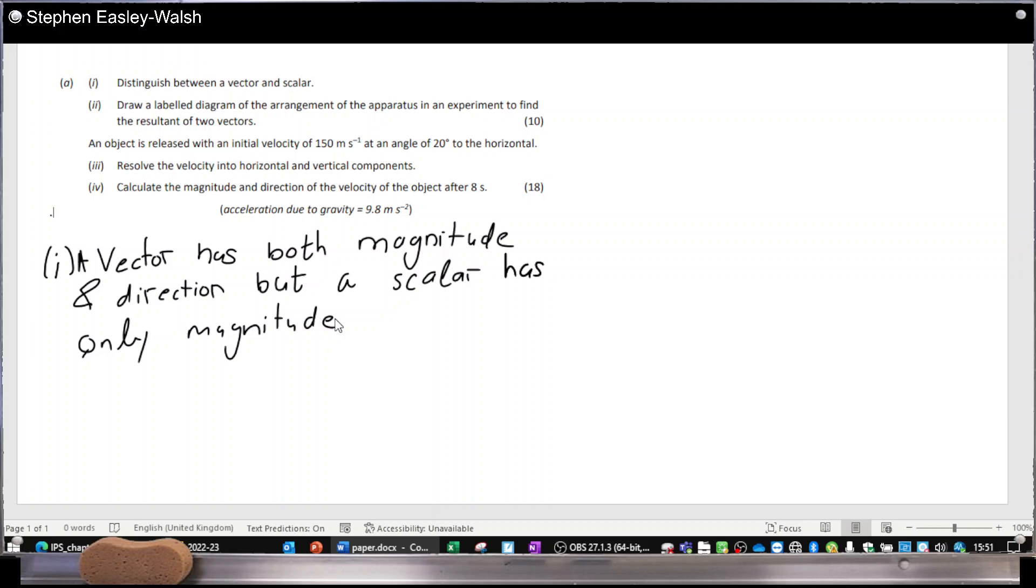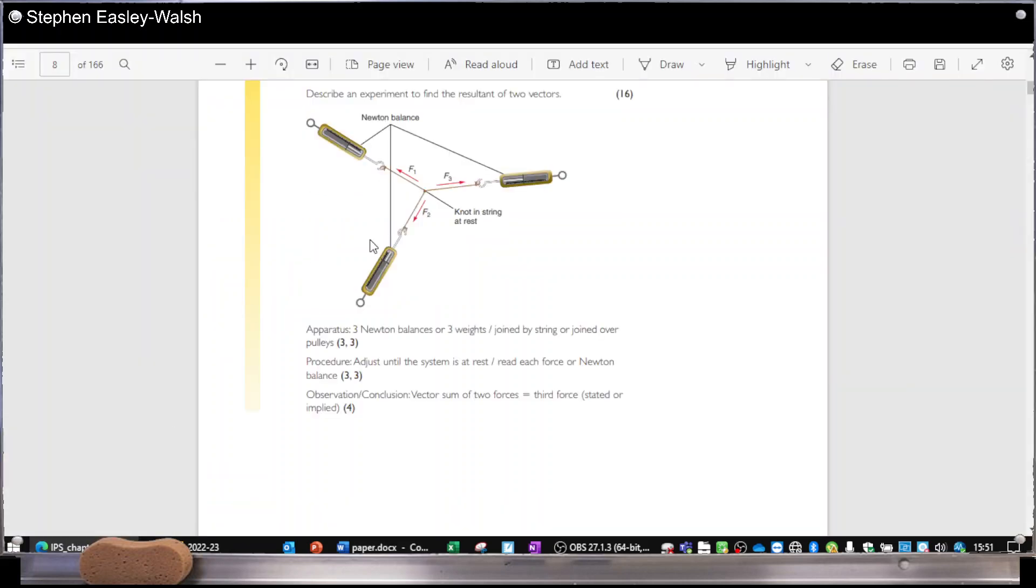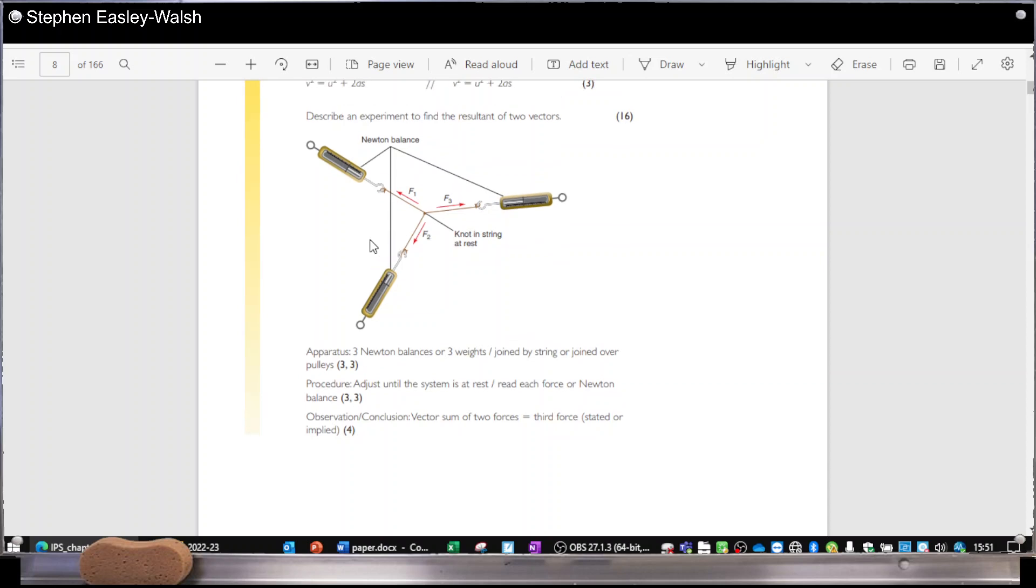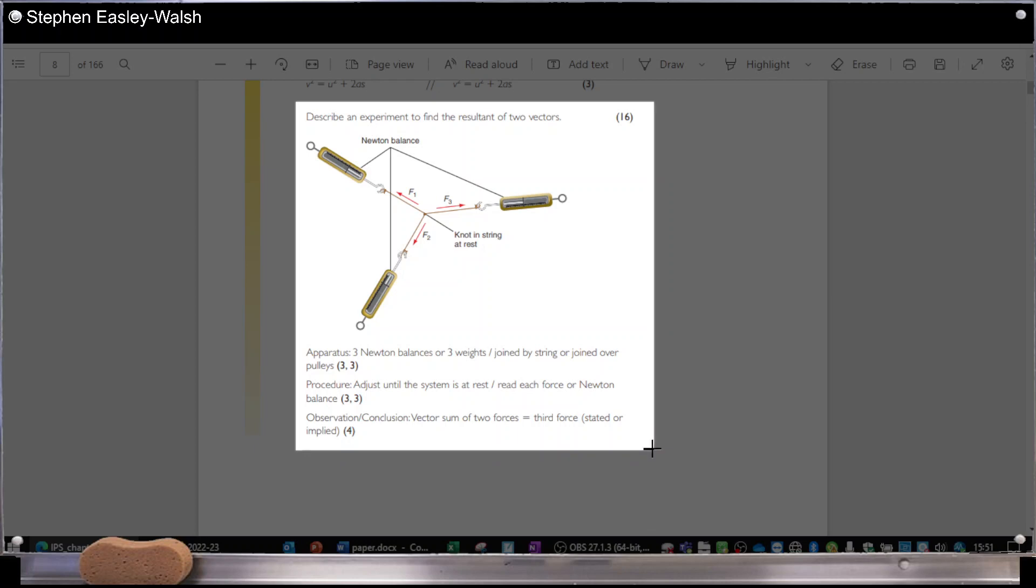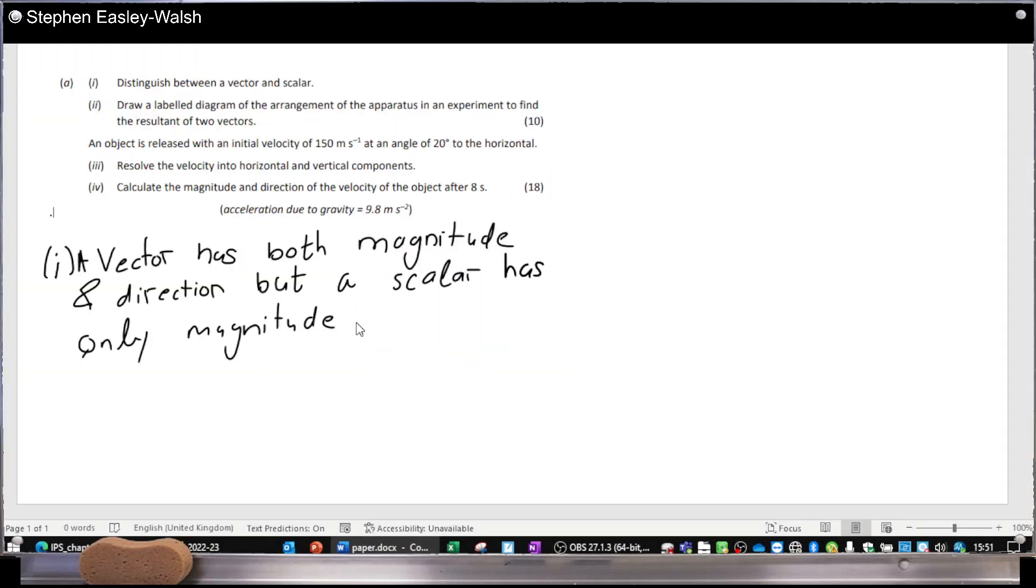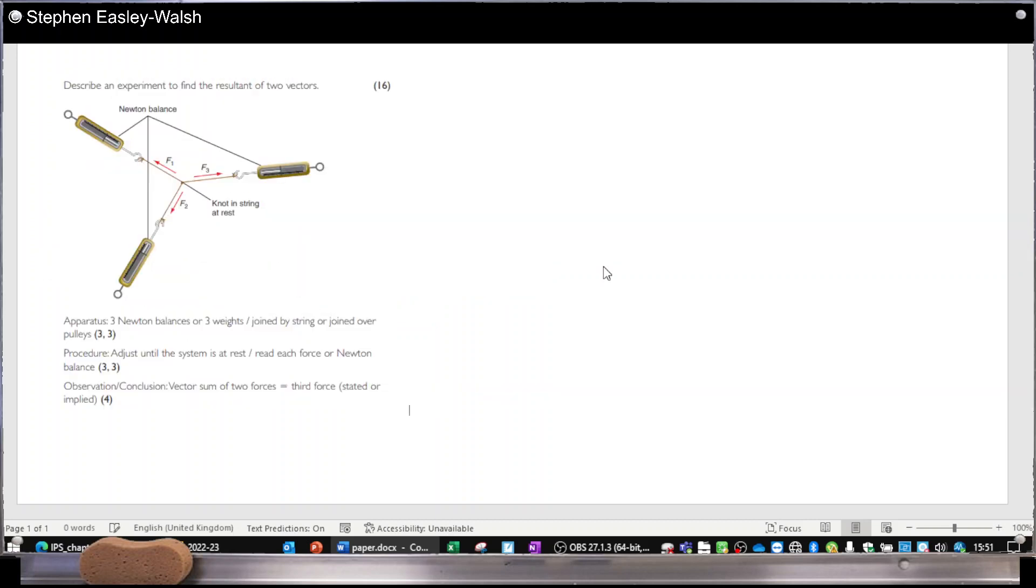The next question is an experiment to find the sum of two vectors. You'll find this in your physics book. I found a book online, Guild Books has a solution book. And they have a nice looking example of what a solution in the exam would look like to such a question. So I'll just paste it here for the moment. And using three Newton balances, that would be three marks. And then the procedure is to adjust the system until it's at rest. That is until each one of these are balanced. And then the observation is the vector sum of the two forces is equal to the third force. So that's 3, 3, 4, 10 marks.